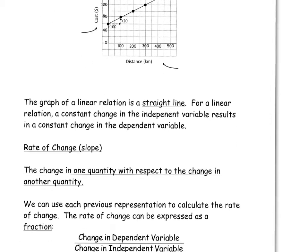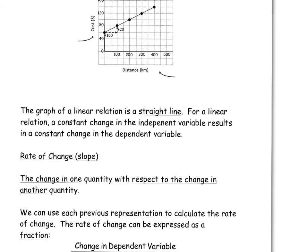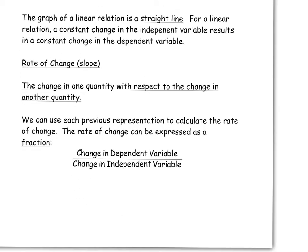So the rate of change, the slope. The rate of change is considered to be the change in one quantity with respect to the change in the other quantity. Very much like when the distance goes up 100, the cost goes up 20. The rate of change can be calculated by the rate of change in the dependent variable divided by the rate of change in the independent variable. So for our example, the rate of change of the dependent variable was 20, and the rate of change of the independent variable was 100.